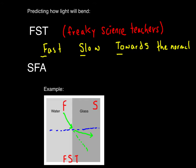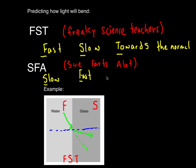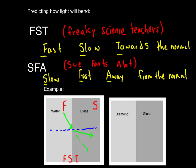The next acronym to remember is SFA — 'Sue farts a lot.' This stands for going from a slow medium to a fast medium; the light ray will bend away from the normal. So if we're going from diamond to glass, diamond is a very slow medium and glass is a faster medium. We draw in the normal line perpendicular to the boundary, draw a light ray coming in towards this boundary, and since it's traveling from a slow to fast medium, it refracts away from the normal line — SFA.